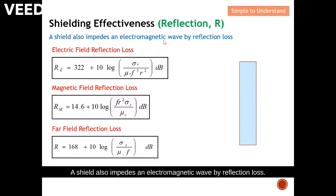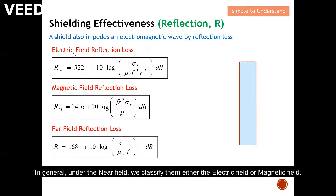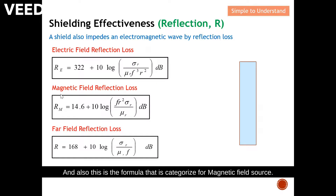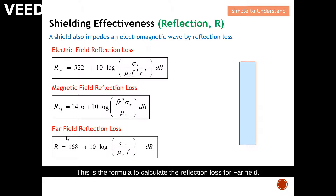Next, let's cover reflection. A shield also impedes an electromagnetic wave by reflection loss. There are three formulas for reflection in general. Under the near field, we classify them as either electric field or magnetic field. This is the reflection loss formula under an electric field source, and this is the formula for a magnetic field source.